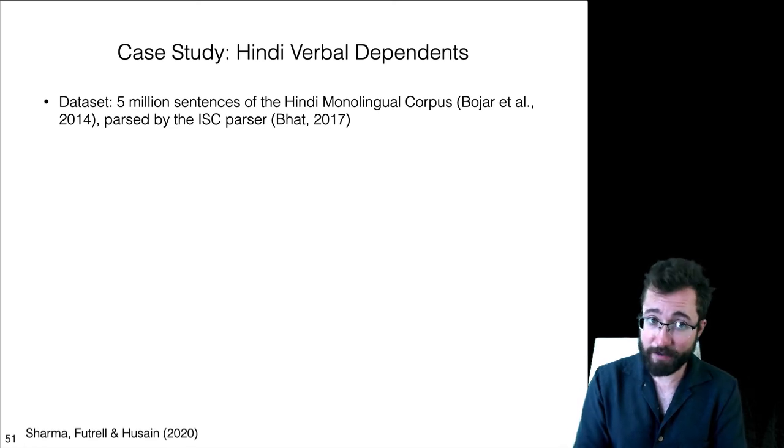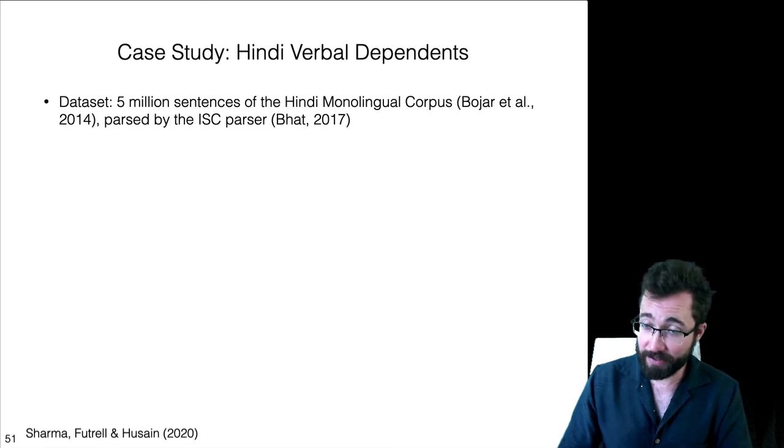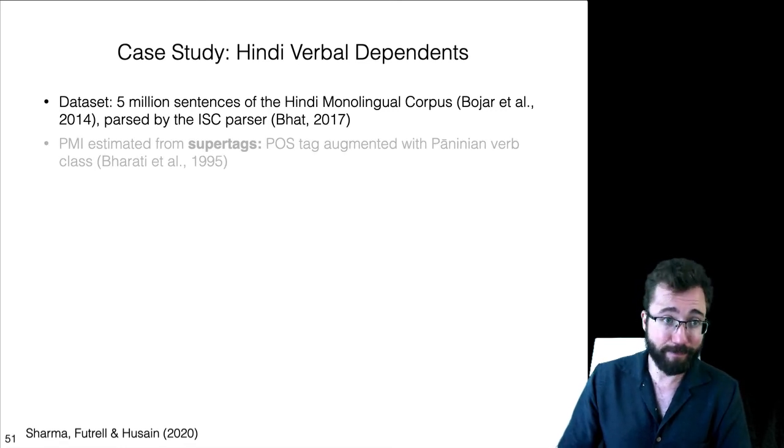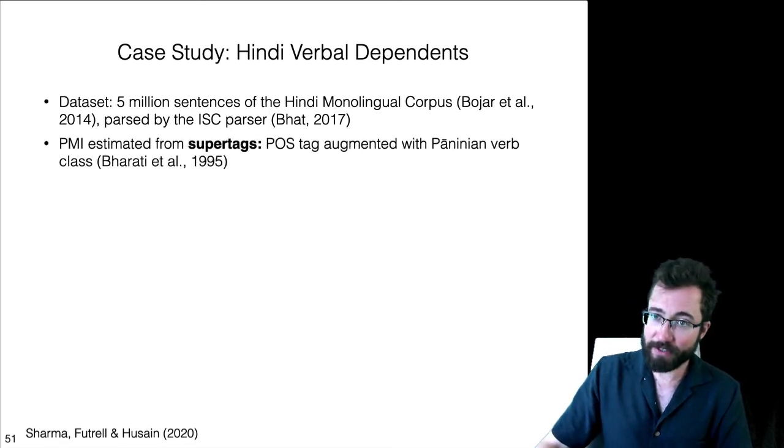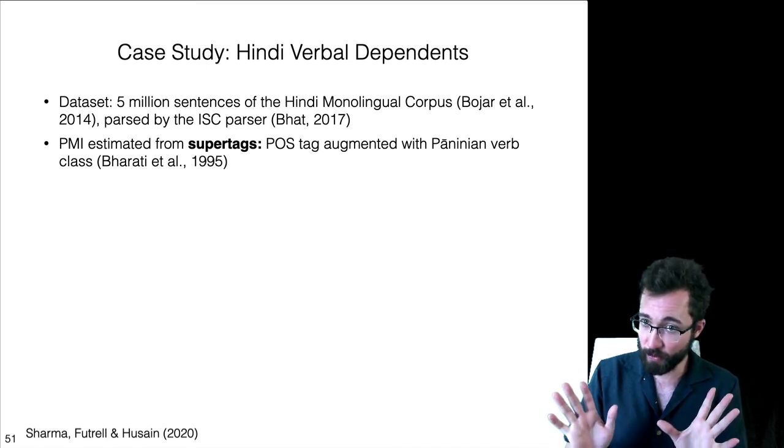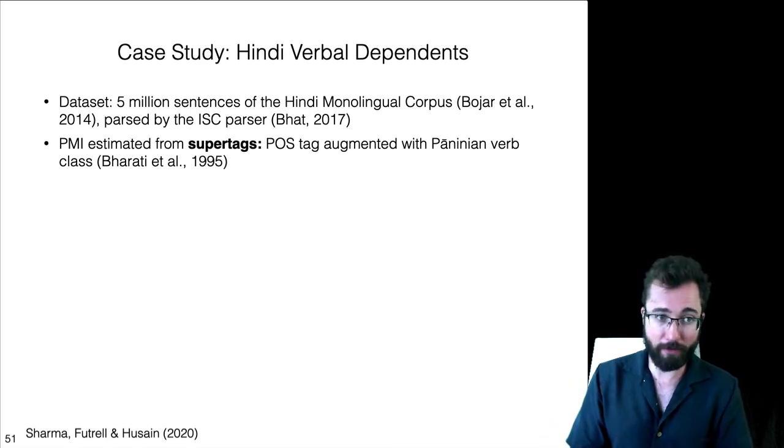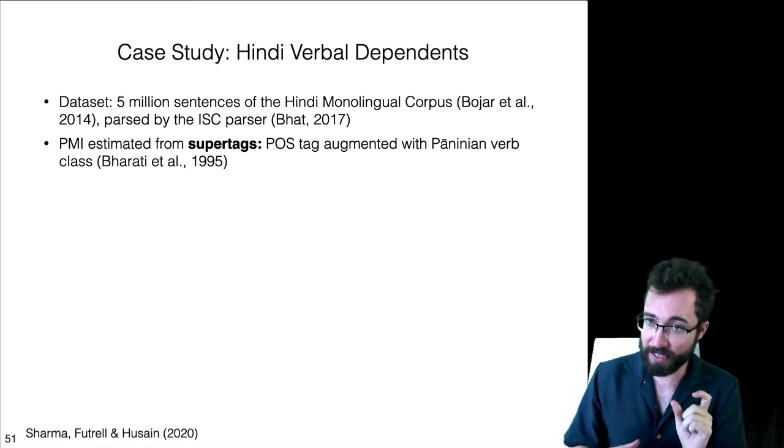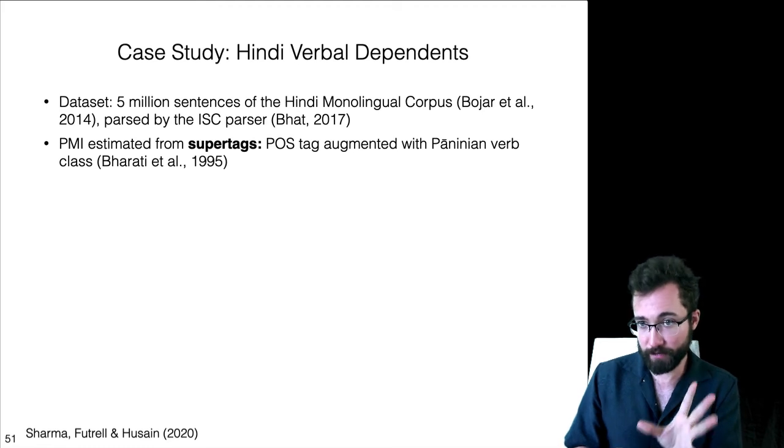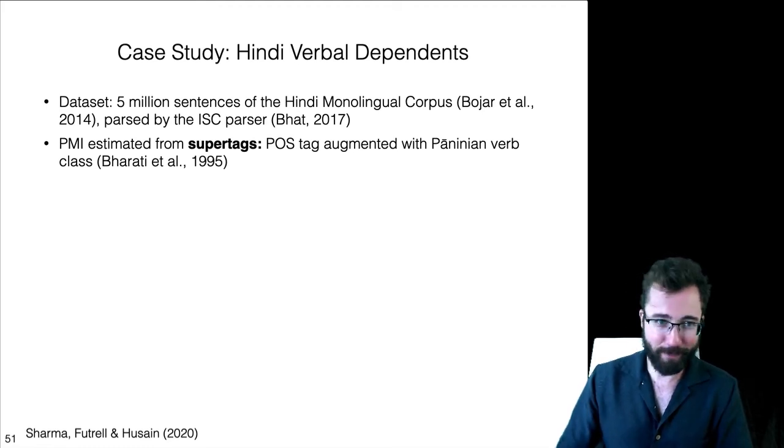The dataset here is 5 million sentences, which were automatically parsed using an ISC parser, which was trained on the Hyderabad dependency tree bank. PMI now is not going to be estimated among word forms. We weren't able to get stable estimates using word forms. Rather, it's estimated using super tags. These are part of speech tags that are augmented, essentially with the argument structure of verbs, according to a Paninian grammar.